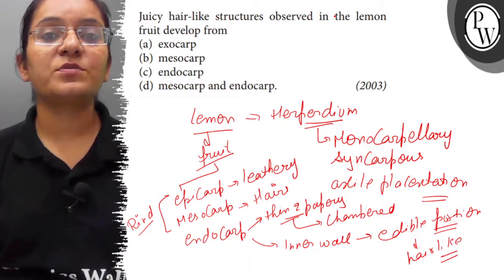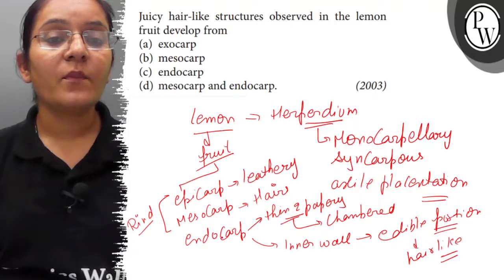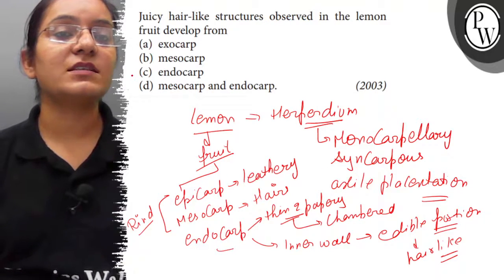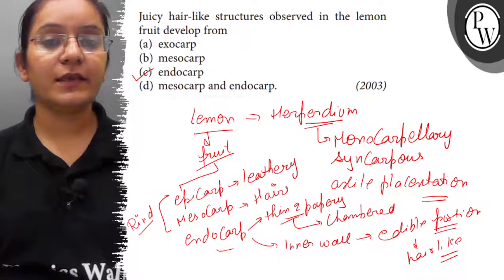So, the juicy hair-like structure observed in lemon fruit develops from Endocarp. The correct answer here is option C. Thank you.